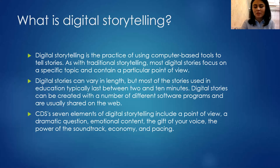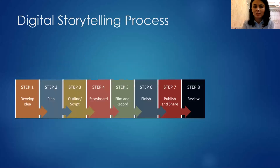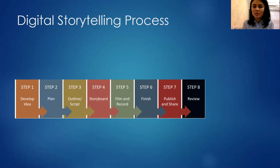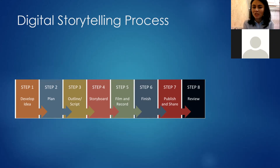We talked about the seven components of digital storytelling, and now we're discussing the steps to follow when creating a digital story. We covered the planning part, then step three: creating an outline — the first draft of the script. Using the storyboard, we put together the narration, pictures, videos, and illustrations. In step five we film and record using digital storytelling software, and in step six we finish up.